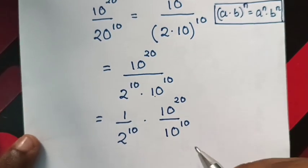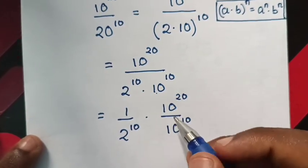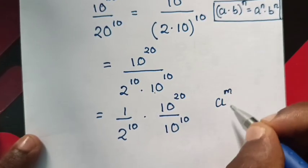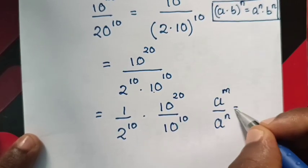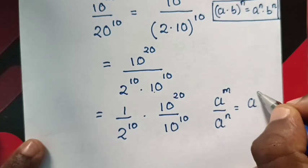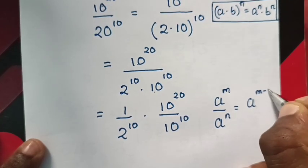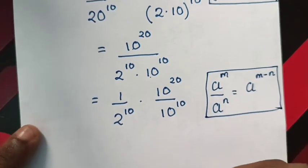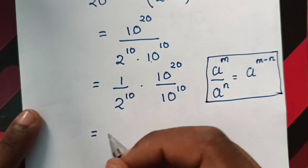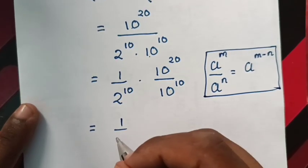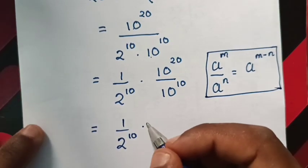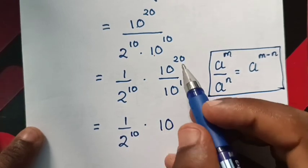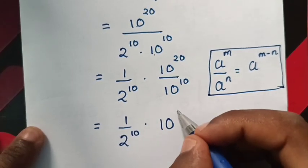Now we will apply exponential rule that a power m over a power n is equal to a power m minus n. So this will be equal to 1 over 2 power 10 times 10 power 20 minus 10 which is 10.